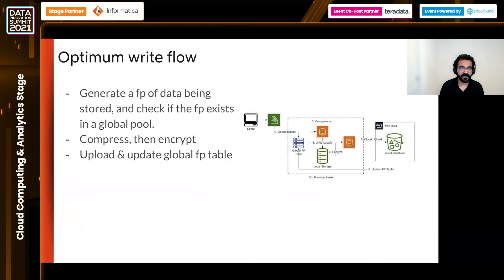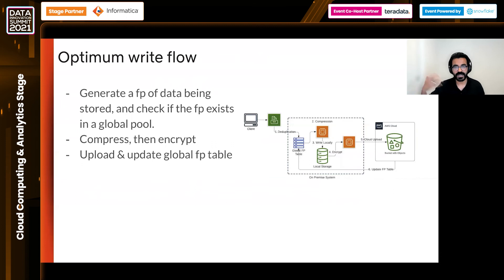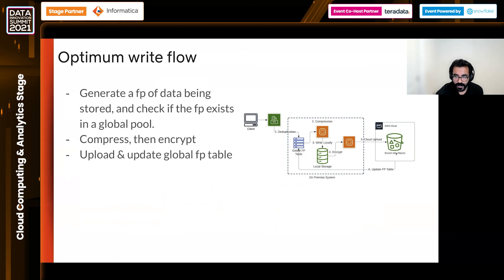Bringing all of this together: if we want an optimum write flow using a hybrid model of on-premise and cloud — where on-premise acts as a cache for the cloud tier to remove egress costs — when a file is being uploaded, you first deduplicate by hashing and checking a global fingerprint table. If the fingerprint exists, return a reference to the client. If not, insert a placeholder, compress the data locally, write the compressed bits to local storage, and encrypt at the point of cloud upload. Once uploaded to cloud, update the fingerprint table to reflect the location in cloud.